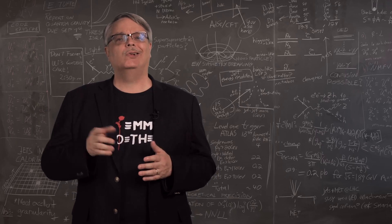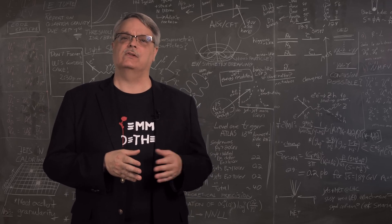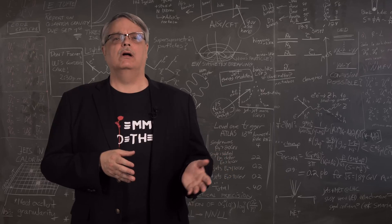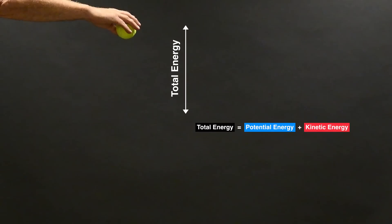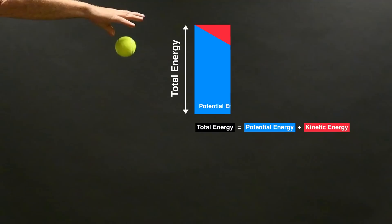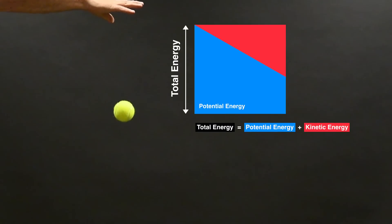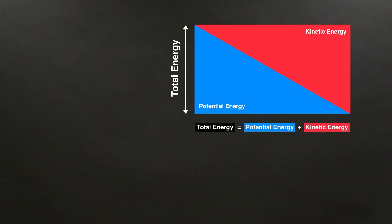Conservation of energy is also commonly encountered in physics class. If you take a ball and pick it up, the ball has potential energy. If you hold it still, it has zero kinetic energy, which is the energy of motion. But if you drop it, the ball moves quicker and quicker, losing potential energy and gaining kinetic energy. But the total amount of energy doesn't change, it just changes forms.